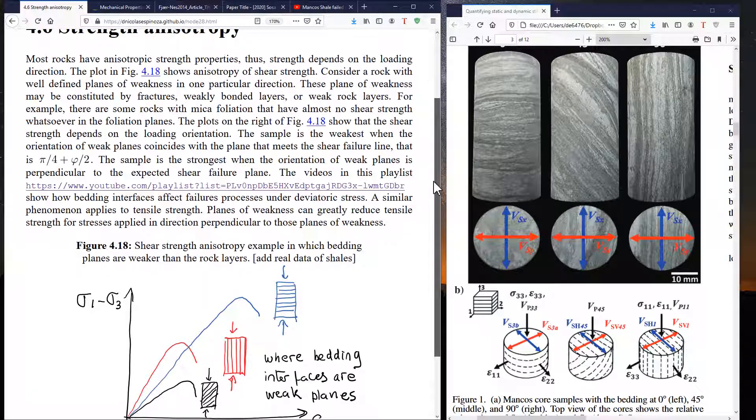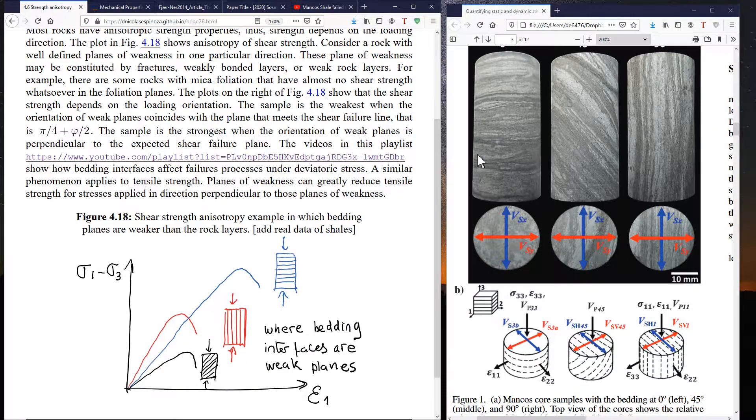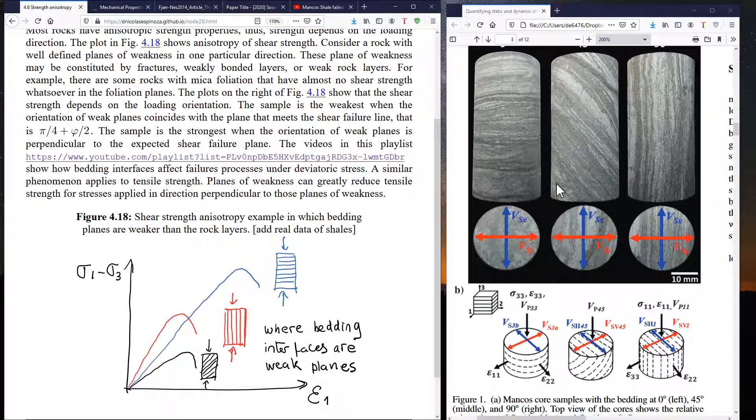Natural rocks are often anisotropic as you can see in this example with this sedimentary rock which is a shale composed by layers of finely compacted siltstone and shale with organic matter which is the darker regions. As a result of this layering,